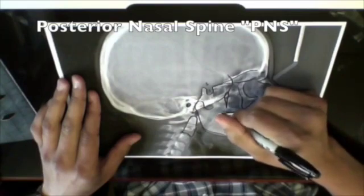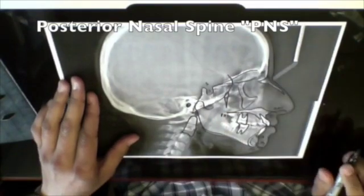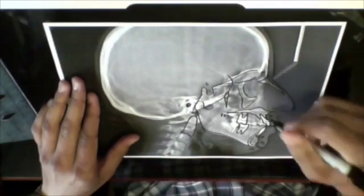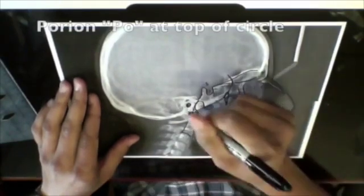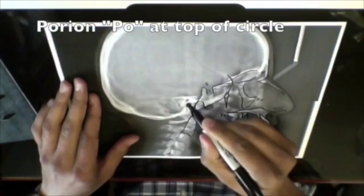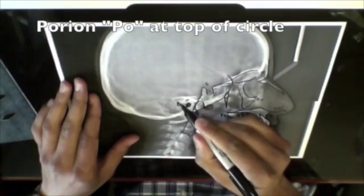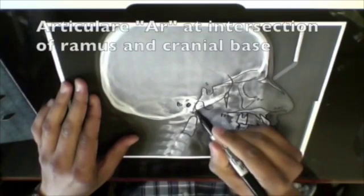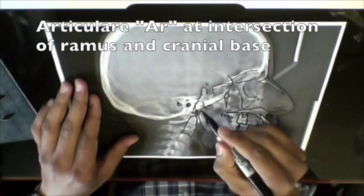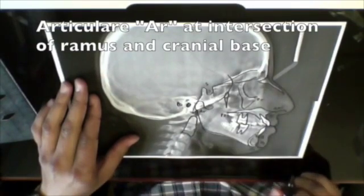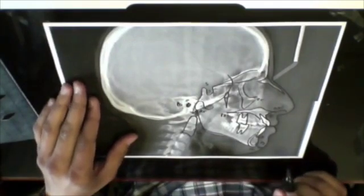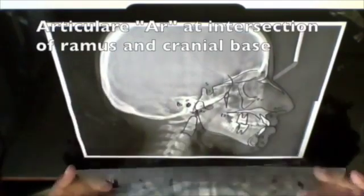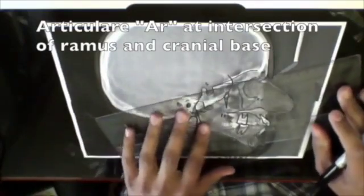Posterior nasal spine is the distal most or posterior most point on the maxilla. Orbitale is the inferior most point on the tracing of the orbit and then porion is the top of the external auditory meatus outline. Articulare is just the intersection of the anterior cranial base with the outline of the ramus of the mandible.